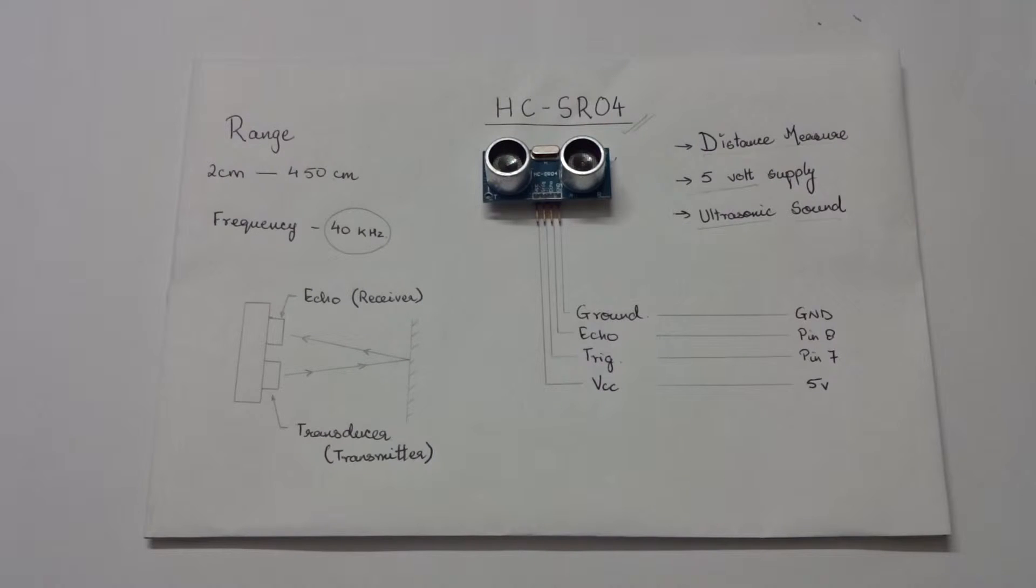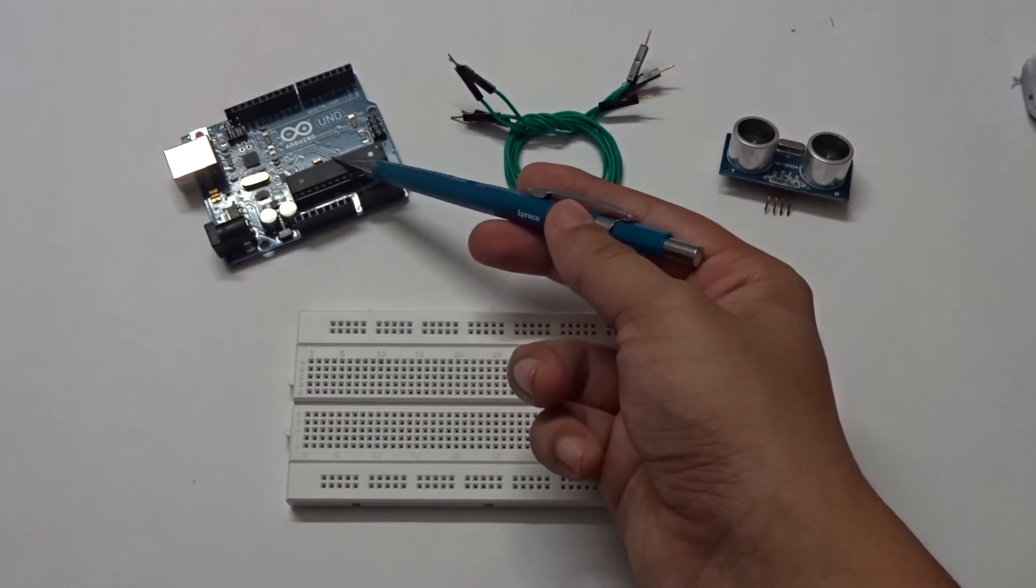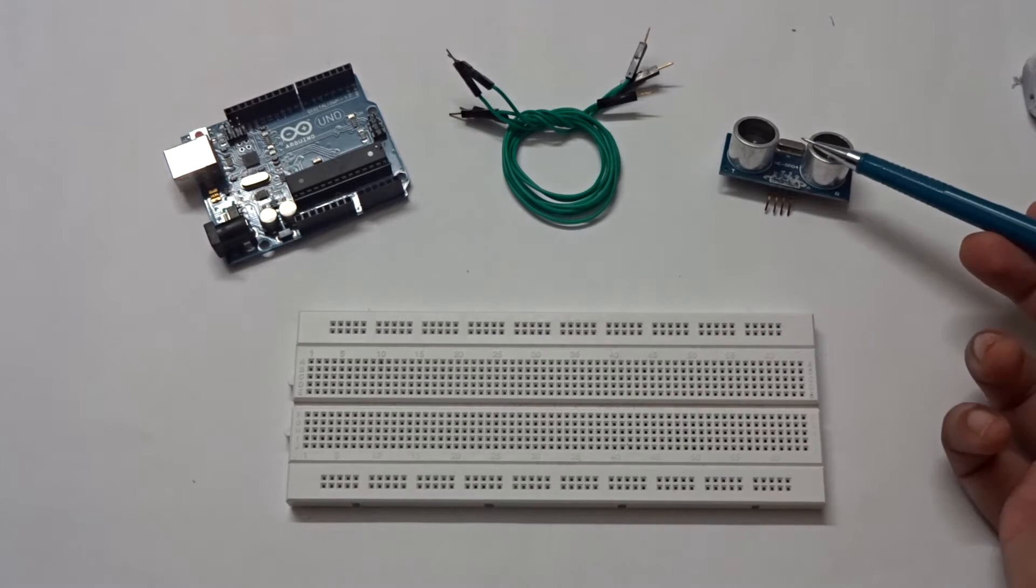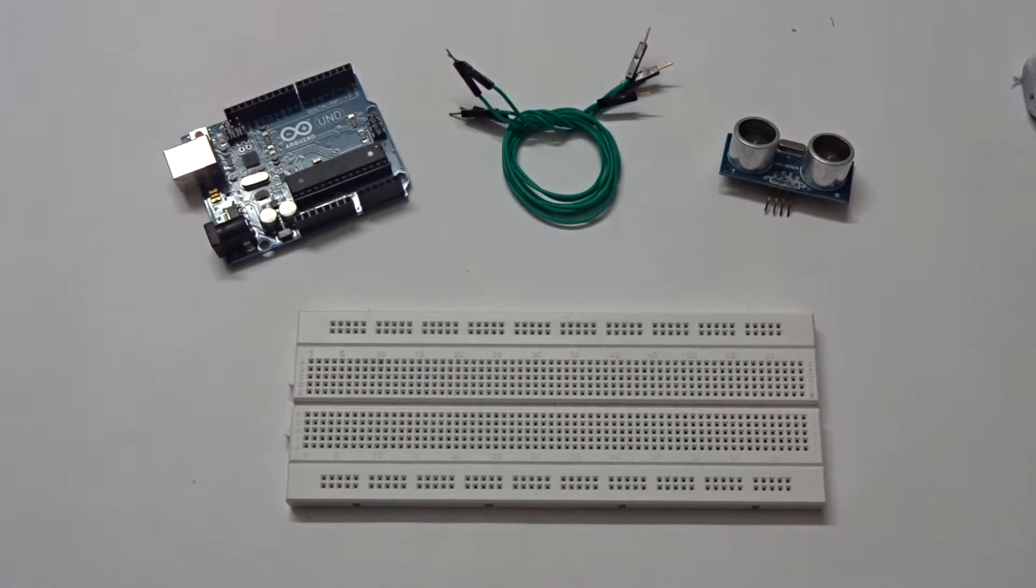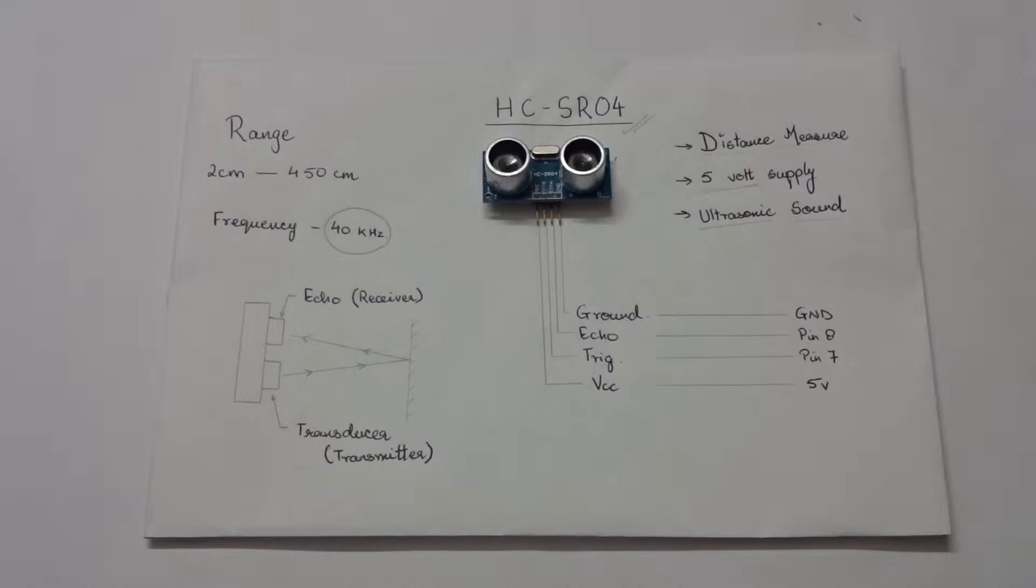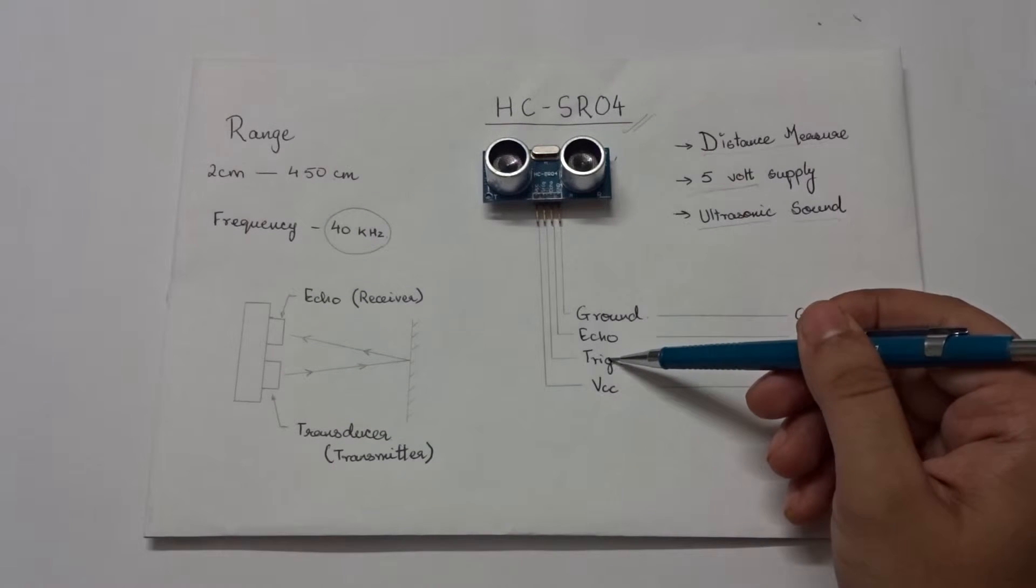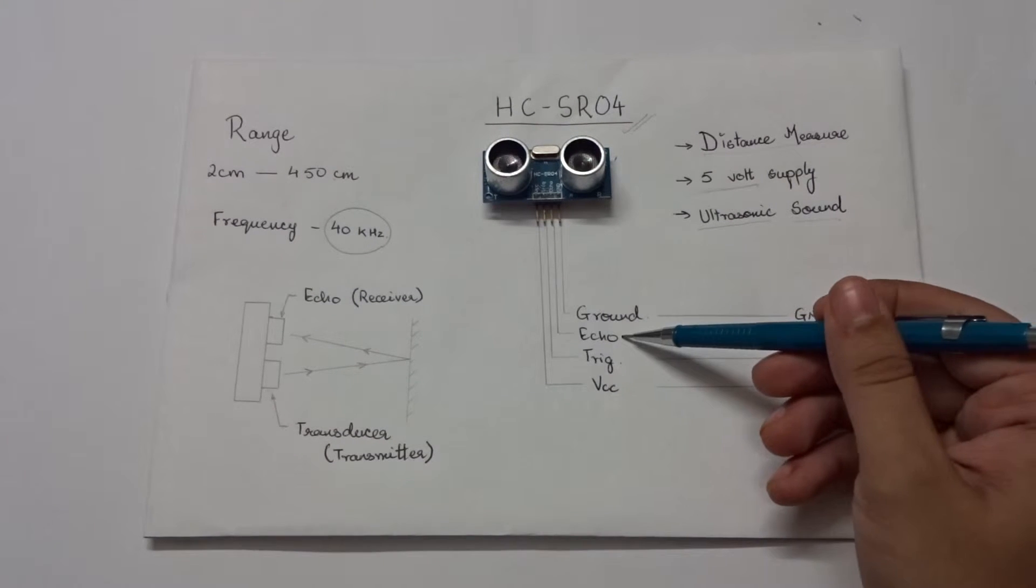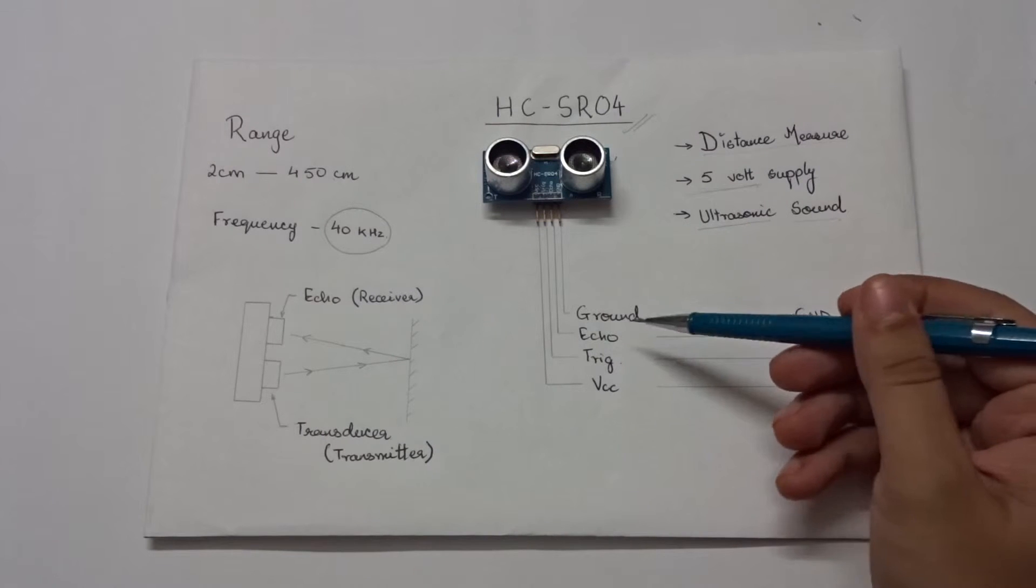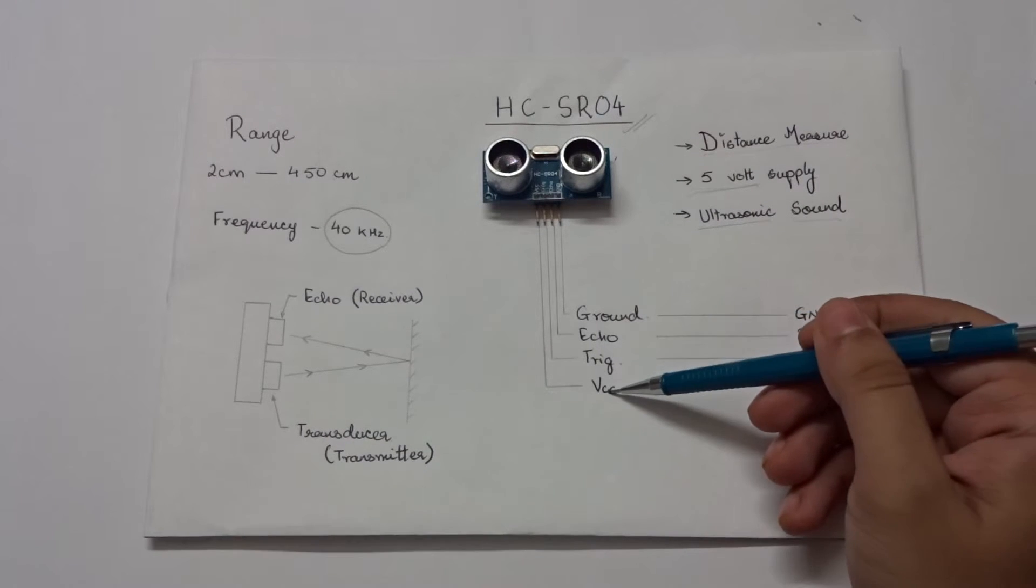The components required are an Arduino, some jumper cables, a breadboard and yes one ultrasonic sensor. So let's go to the pin list of the sensor. We have a trigger pin here which is basically an output pin. The echo pin here is an input pin. Two other pins are ground and VCC.